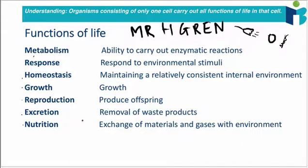It has to be able to perform excretion, so that's to remove all of its waste products. And then finally, it has to be able to obtain nutrition — that's the ability to exchange materials and gases with the environment. For example, we need glucose and oxygen to do cell respiration, so we need to be able to get these materials into our cell. Remember those different functions and give a brief explanation of what each of those mean.